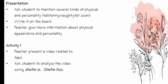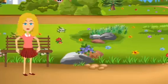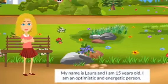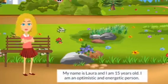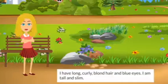The teacher presents the words 'personality' and 'appearance' and explains the differences to students. The first activity is the teacher presenting a video related to the topic. In the video, a student introduces herself: 'Hi, my name is Laura and I am 15 years old. I am an optimistic and energetic person. I have long curly blonde hair and blue eyes. I am tall and slim.'